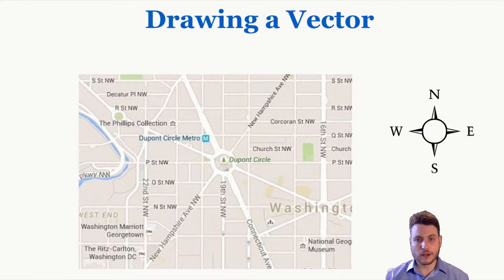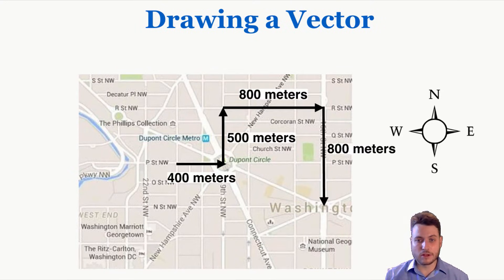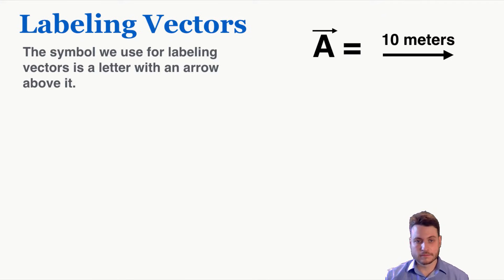The reason we proportion them this way is that it helps us see the relationship between multiple vectors. For example, if you're trying to describe motion like distance or displacement using a vector, having the sizes of the arrows represent the actual sizes can help you visualize motion much more easily than if they were just arbitrary sizes. The symbol we use for labeling vectors is a letter with an arrow above it — that's a variable that stands in for a vector.